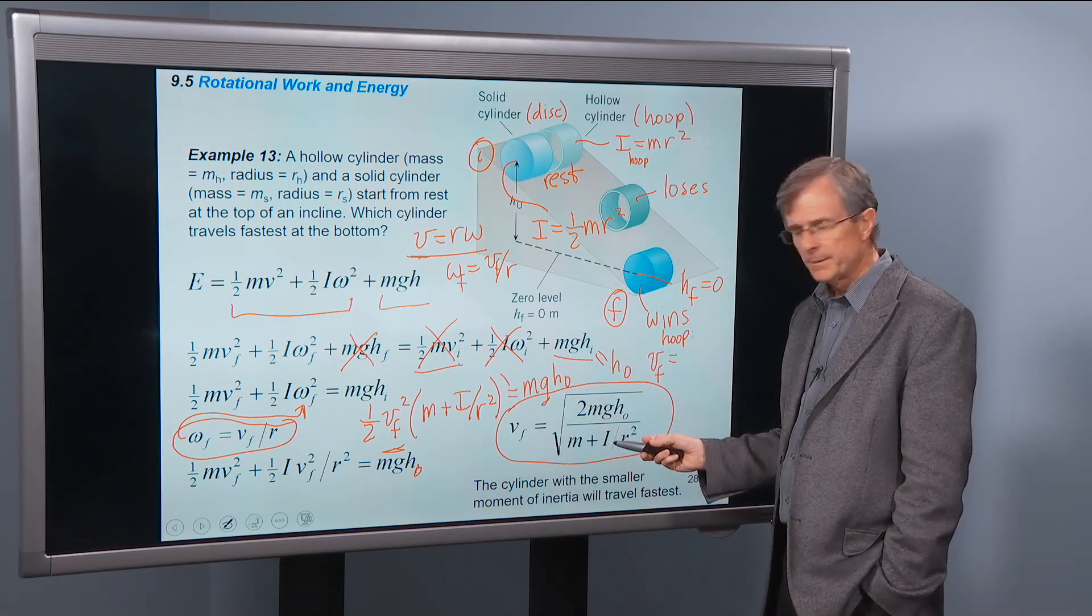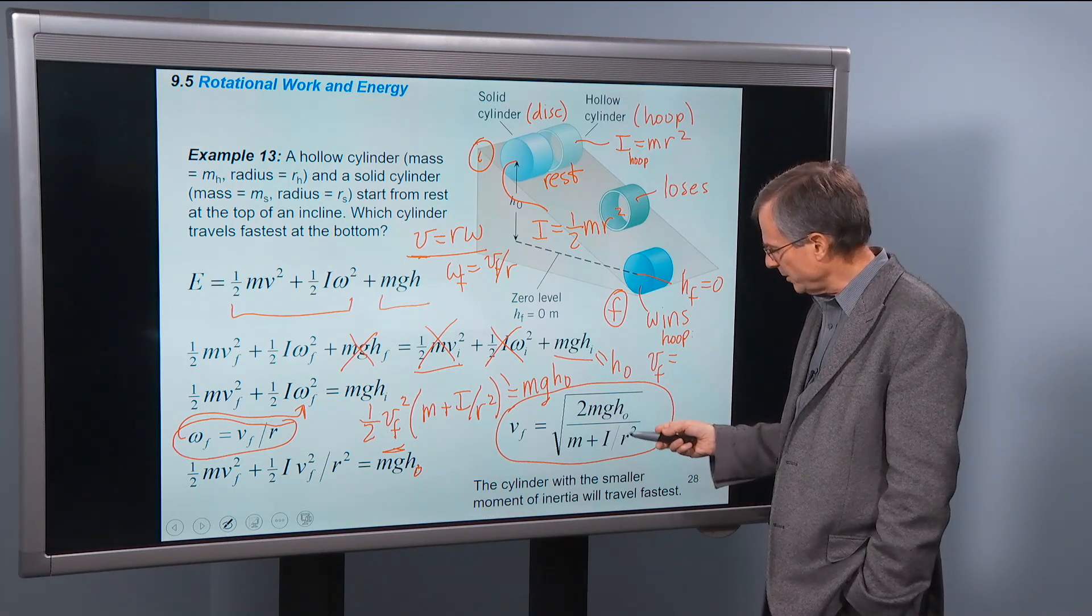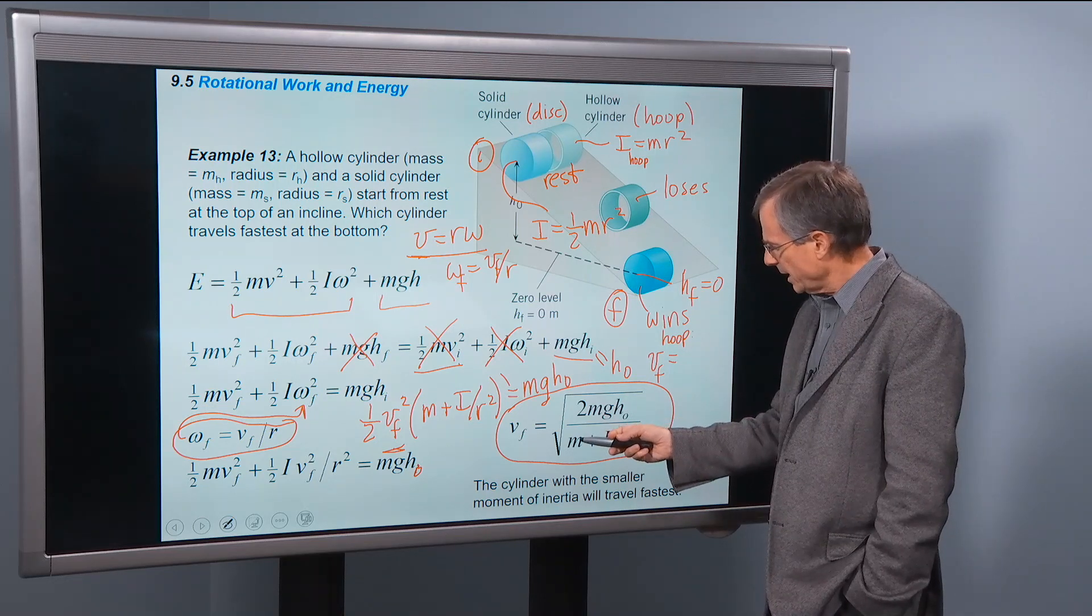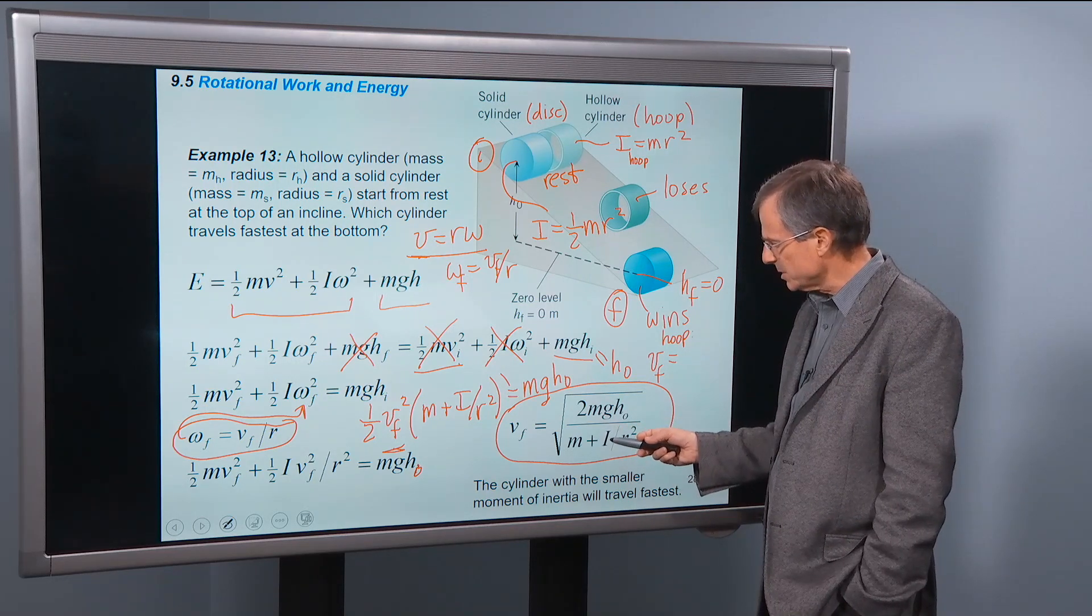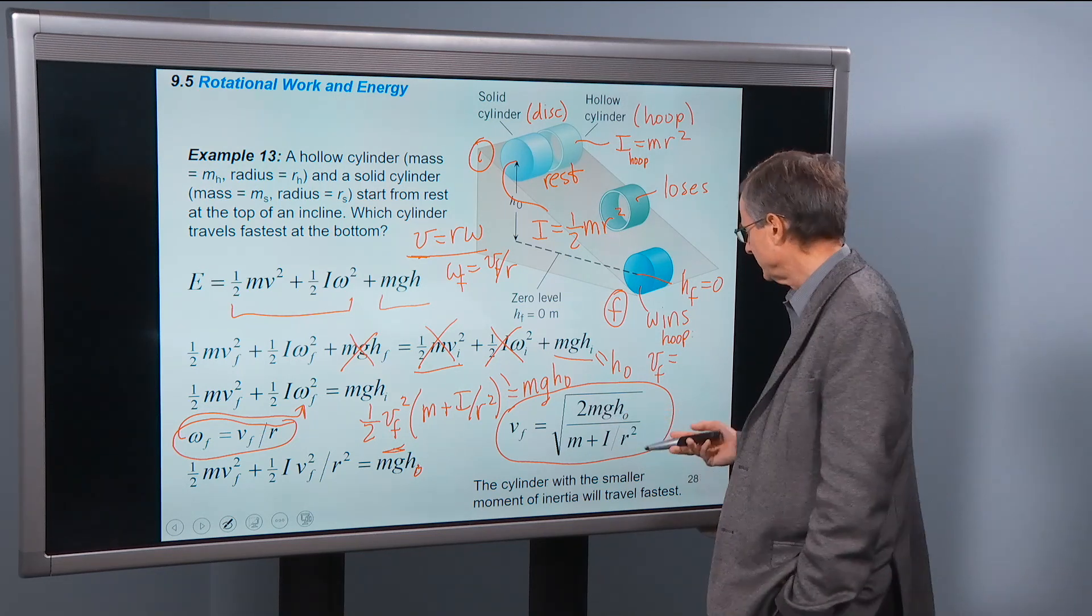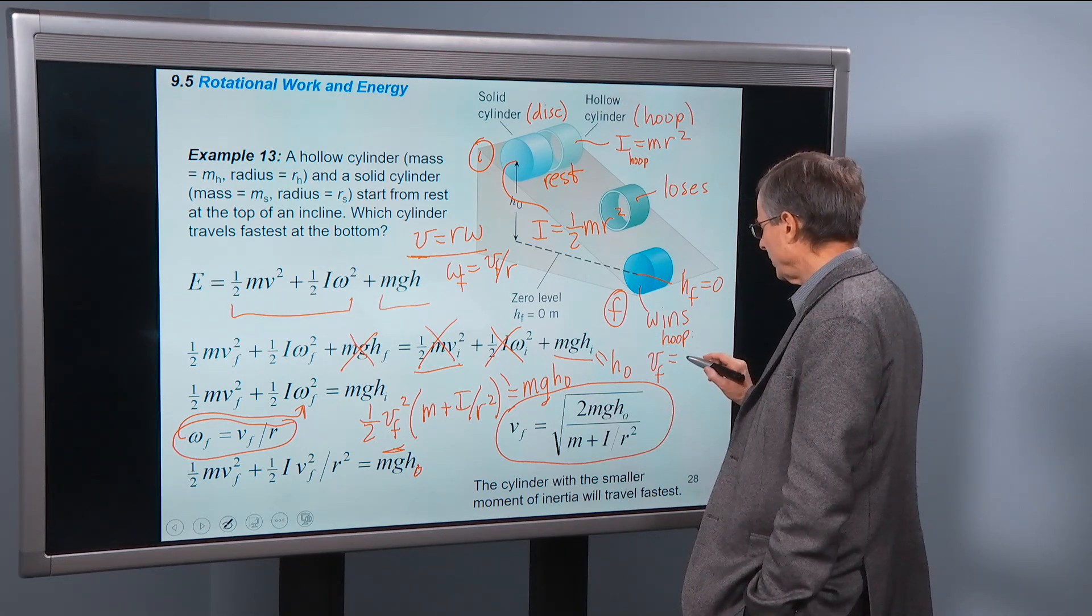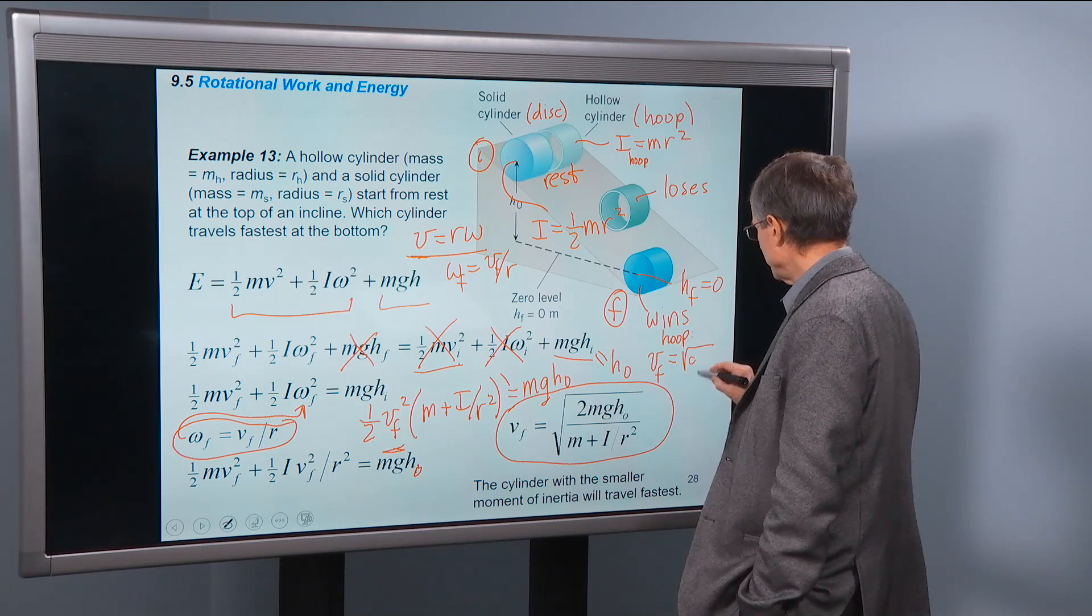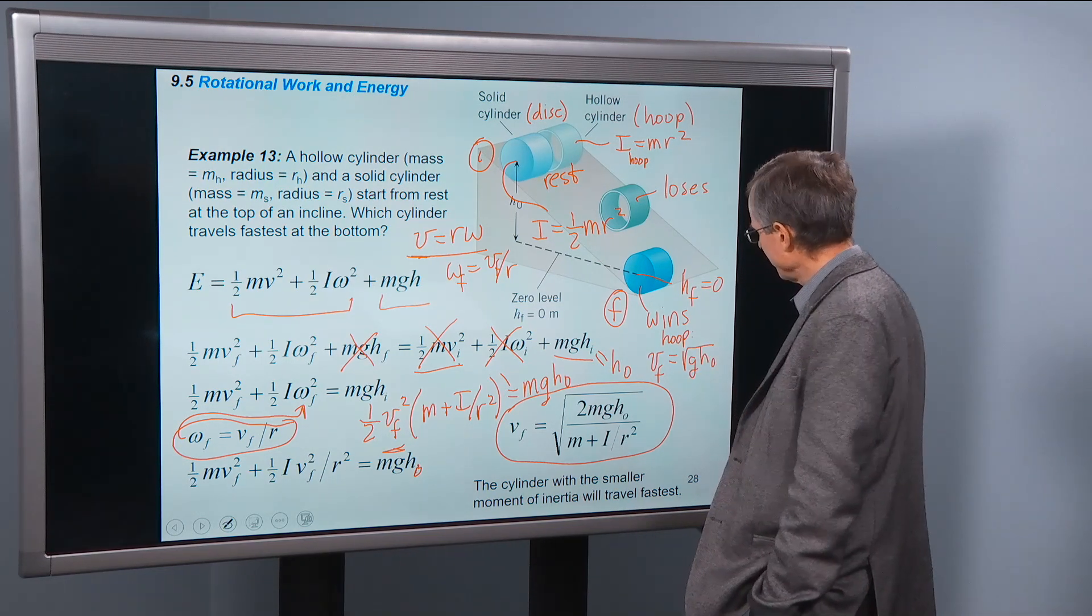I'm going to put that right in here. mr² here. The r² cancel. And we get an m plus an m as a 2m. And amazingly enough, there's a 2m in the numerator. And those cancel. And so the final velocity for the hoop is the square root of gh₀. Very cute.